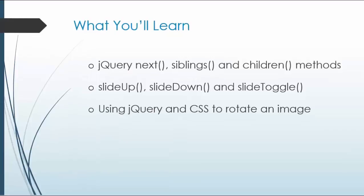Things we'll learn in this project are the jQuery next method, the siblings and children methods and how content relates to each other. We'll look at the slide up, slide down, and slide toggle methods. We'll also be using jQuery and CSS to rotate an image — so when we click on a question, it'll have a little arrow next to it, and when we click it, it should turn and look down towards the answer.